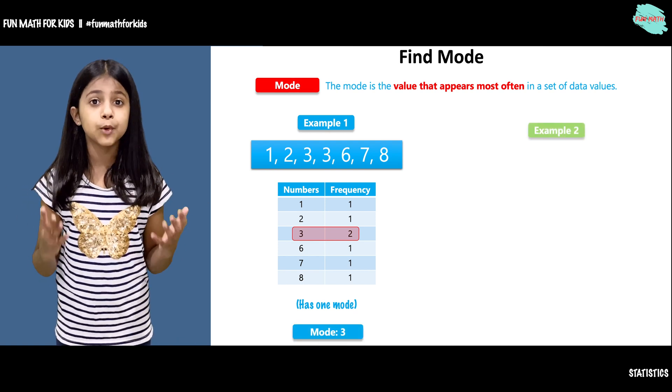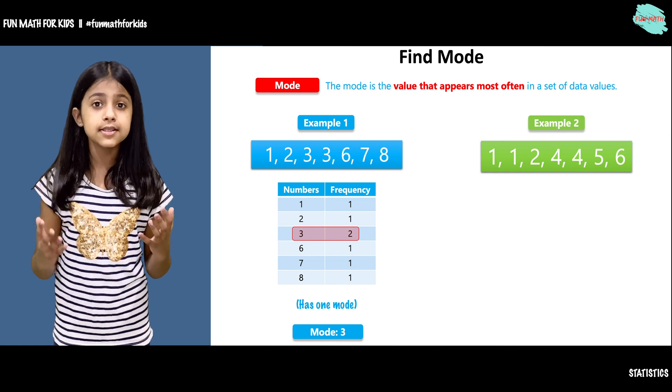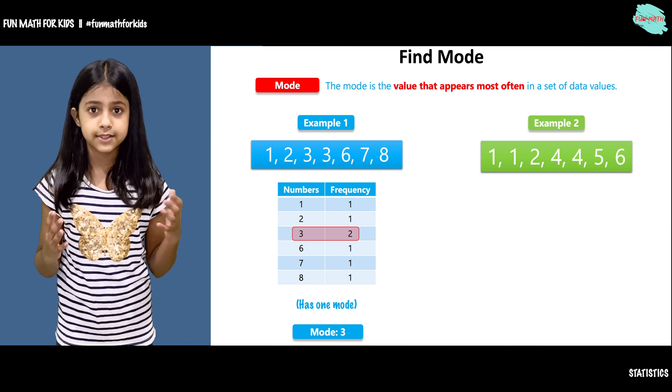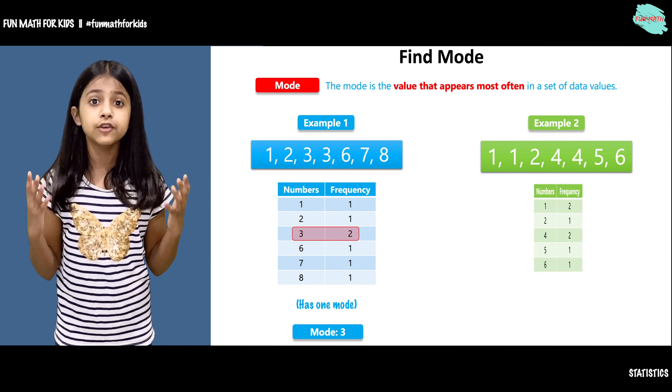In the second example, we have a data set. It has numbers 1, 1, 2, 4, 4, 5, and 6. Here we have a frequency table.